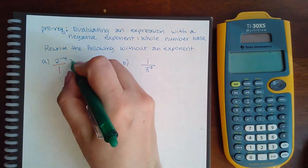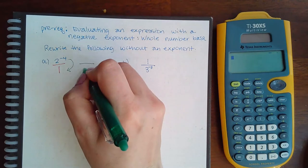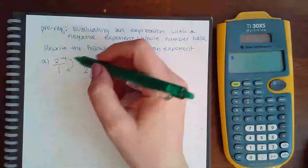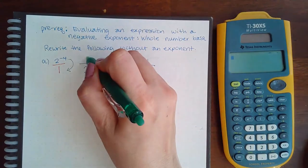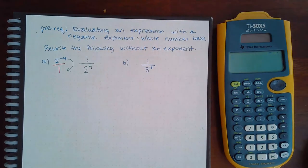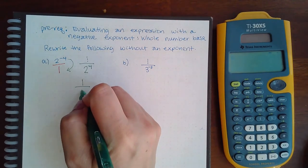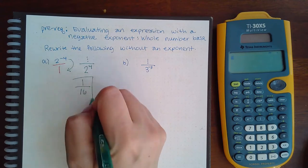Putting the two to the positive four downstairs. And then since I don't have anything left on top, there's always an imaginary one on top. So the final answer is going to be one over two to the fourth, which is actually 16, so one over 16.